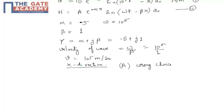Option B, velocity, it is matching. Option C, complex propagation constant is 0.5 plus j1, matching. Option D, matching. So, option A is the wrong answer.